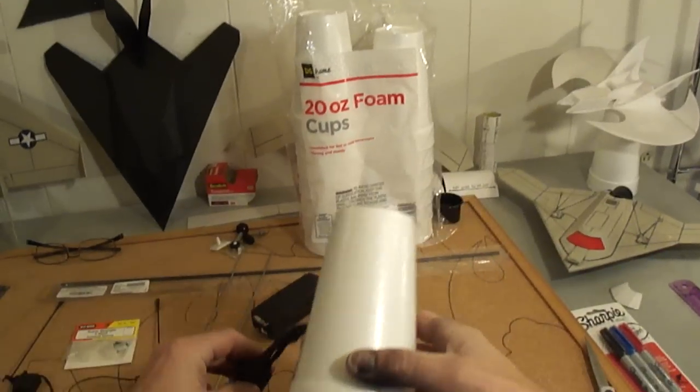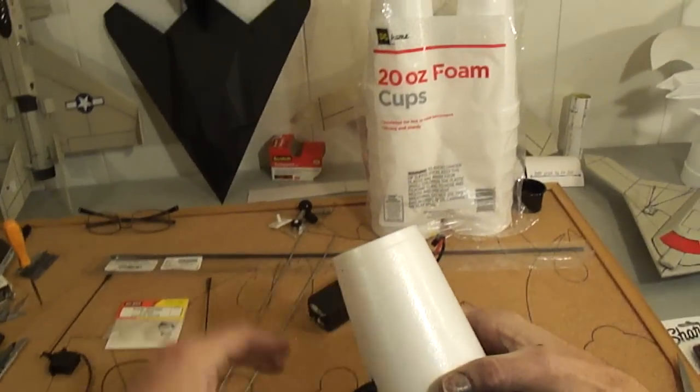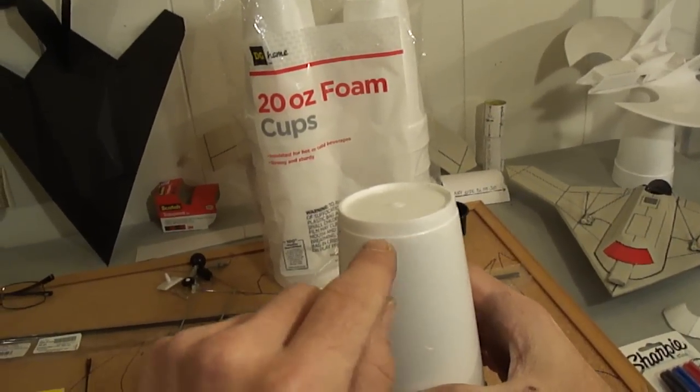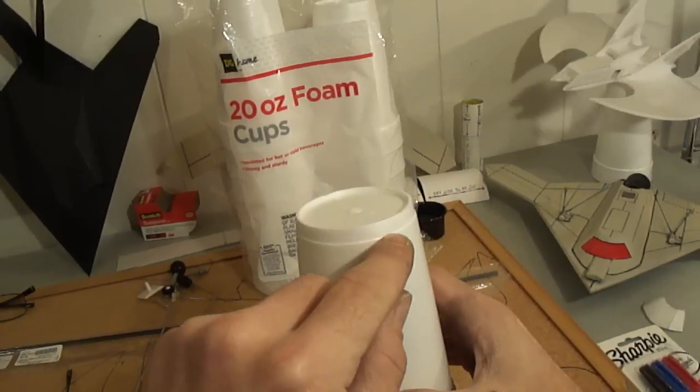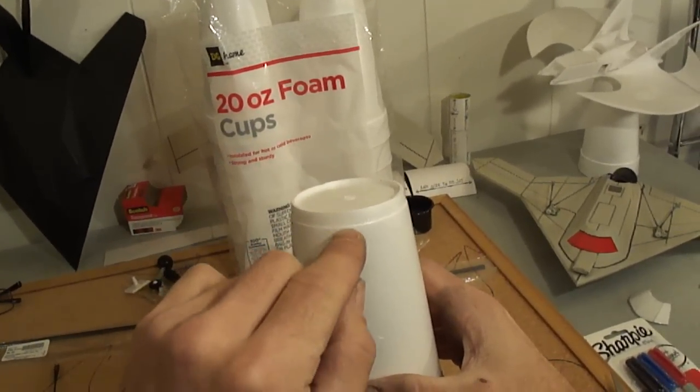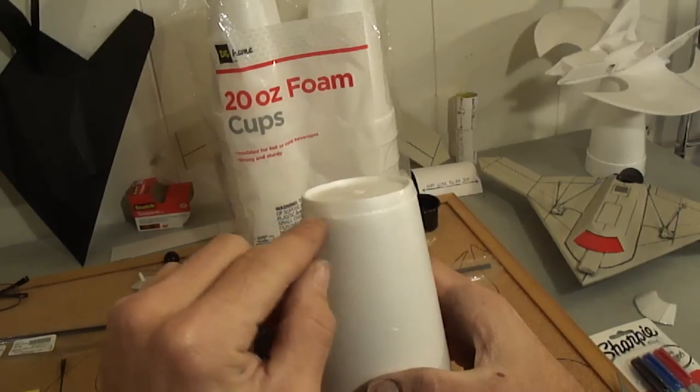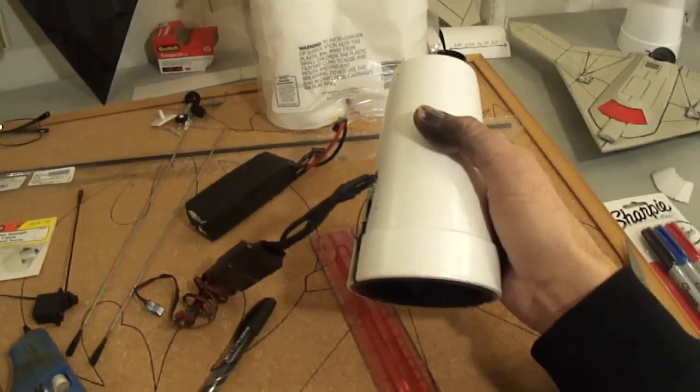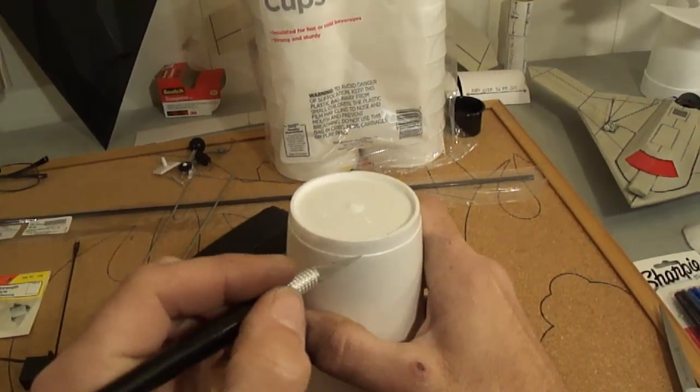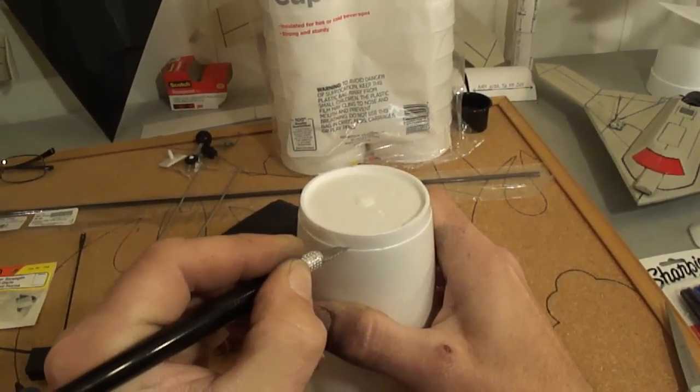Alright, so while that's cooling off, now I'll take the very top leading edge of this foam cup. And you can see the line there. You're going to want to cut off this whole top piece following that line right there. Let's grab our exacto knife. Go in here and start cutting this.